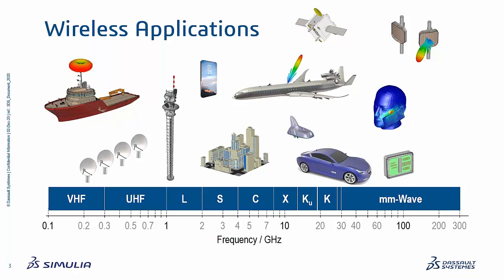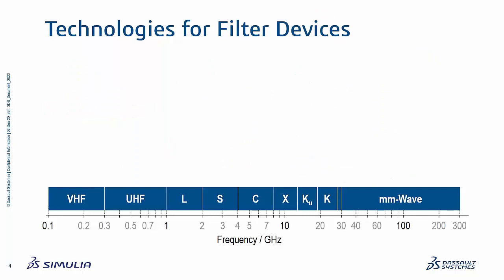With autonomous vehicles, radar systems play an integral role. At the same time, there are military applications and even large radio telescope networks for astronomers. All of these need to coexist and therefore adhere to strict regulations, which inevitably increases the need for filtering devices in these systems.